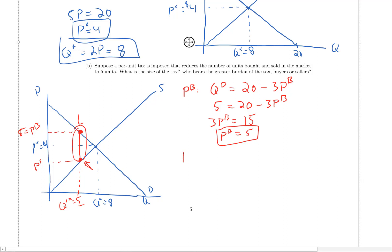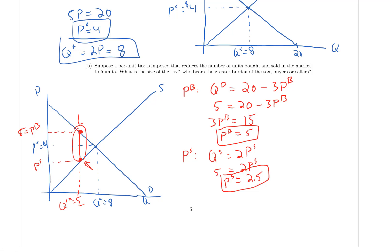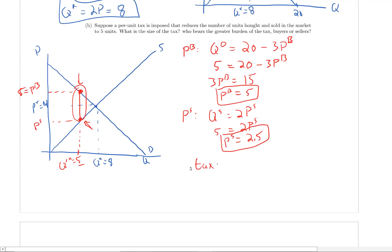Then we can figure out PS. We know that Qs equals 2Ps because now it's the price the sellers get. We know that this left hand side is 5 because we're reducing the size of the market to 5. So 5 equals 2 times PS. So PS equals 2.5. And the size of the tax is the difference between the price the buyers pay and the price the sellers get. So the tax is $2.50.